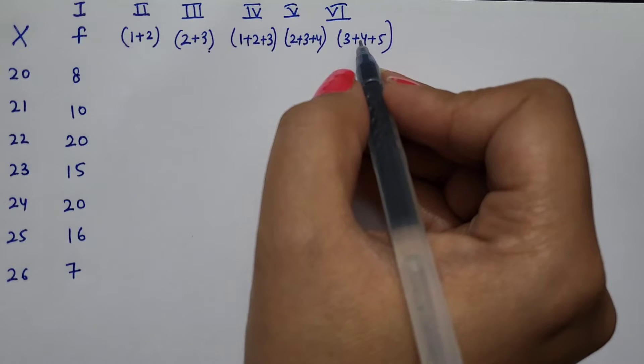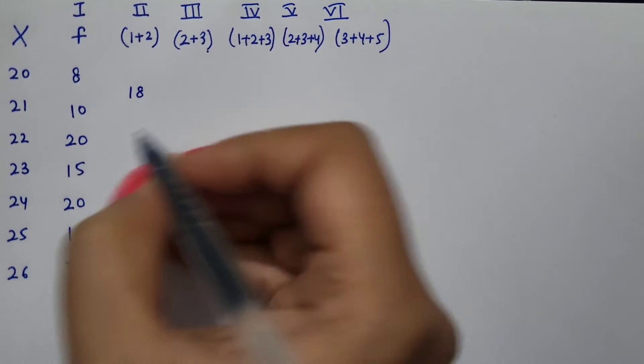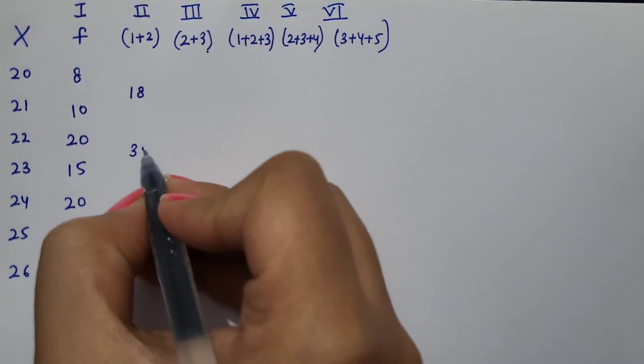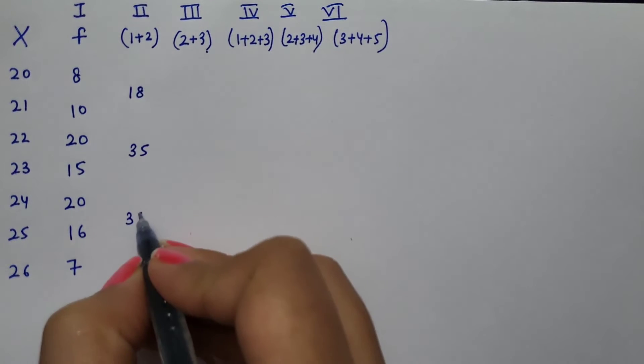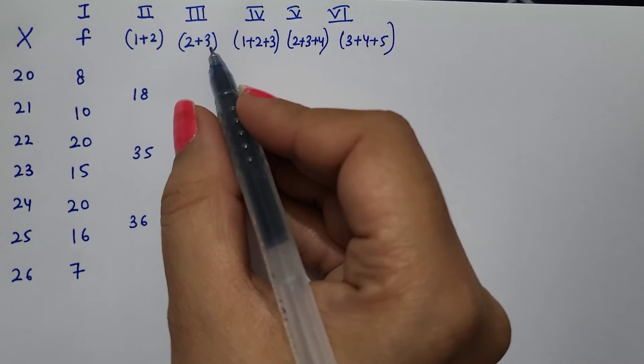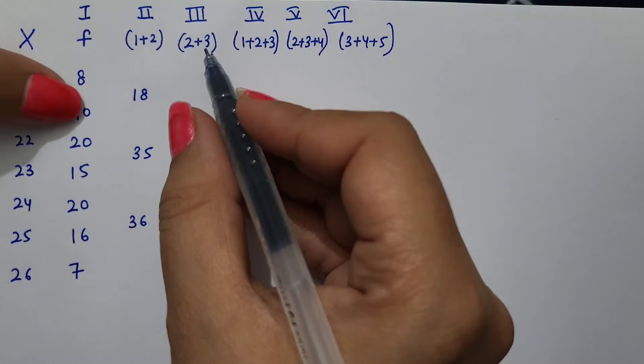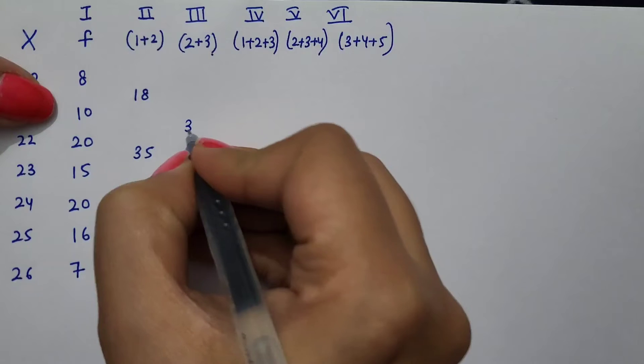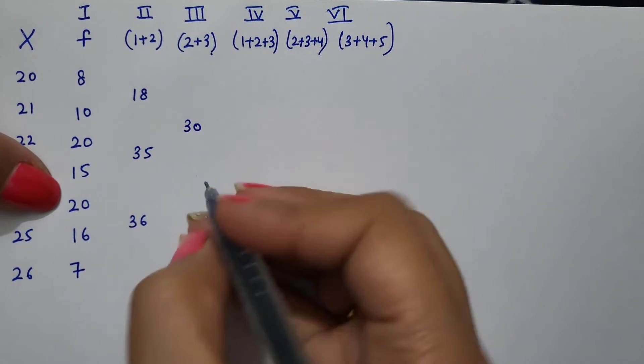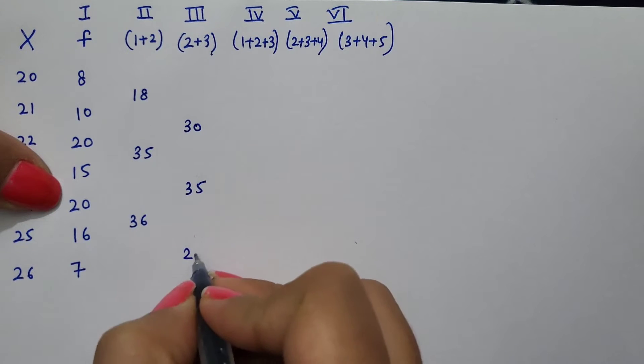We have to sum up accordingly. First column: 8 plus 10 is 18, 20 plus 15 is 35, 20 plus 16 is 36. In third column, we skip the first frequency: 10 plus 20 is 30, 15 plus 20 is 35, 16 plus 7 is 23.